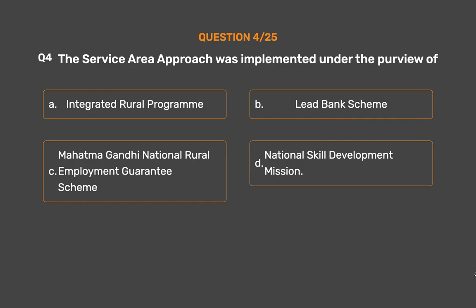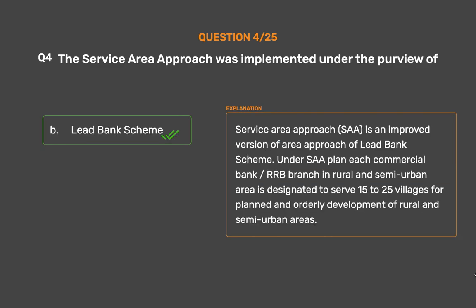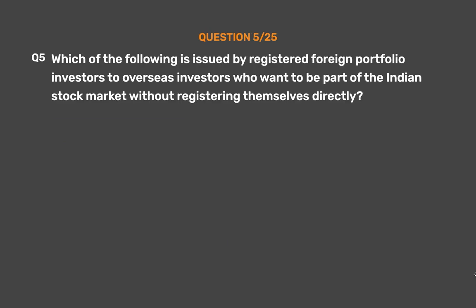The correct answer is Option B: Lead Bank Scheme. Service Area Approach (SAA) is an improved version of the Area Approach of the Lead Bank Scheme. Under SAA, each commercial bank and RRB branch in rural and semi-urban areas is designated to serve 15 to 25 villages for planned and orderly development of rural and semi-urban areas.